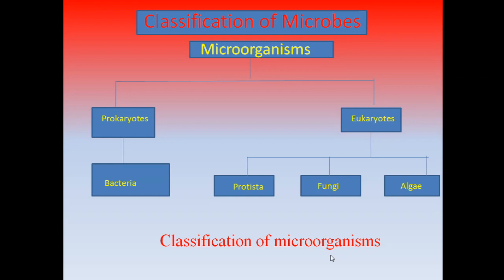The classification of microbes: microorganisms are divided into two types — prokaryotes and eukaryotes. In prokaryotes: bacteria. In eukaryotes: protista, fungi, and algae.